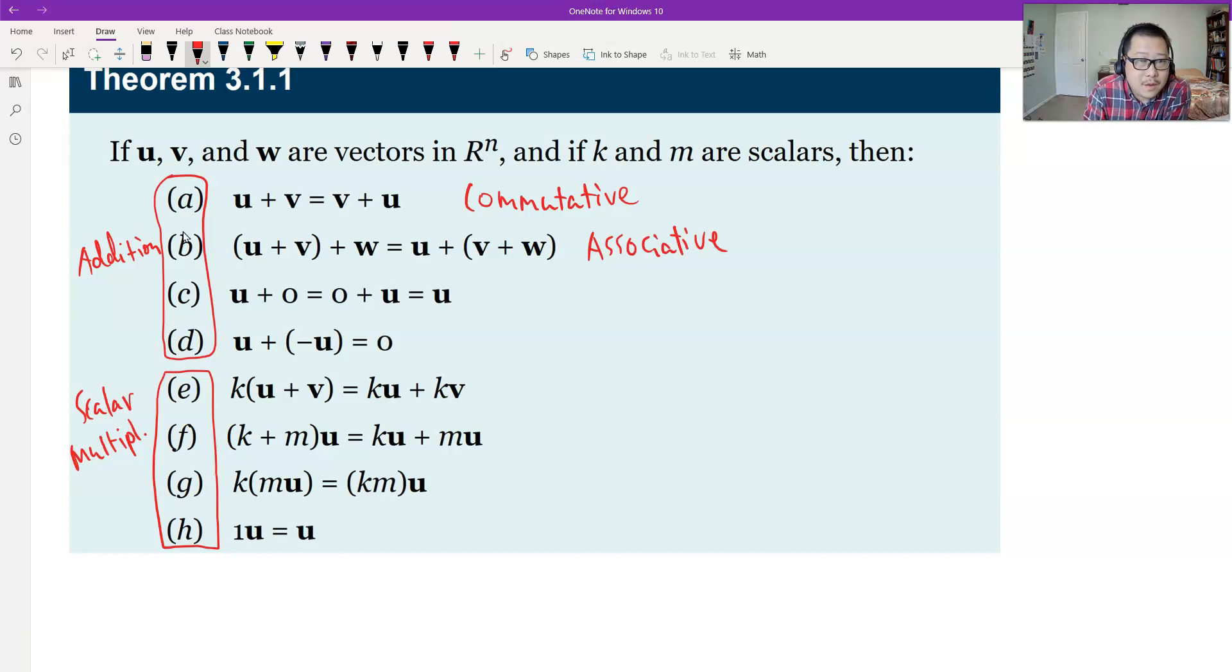And the third is identity. Zero is the identity of addition. So let's say identity of addition.